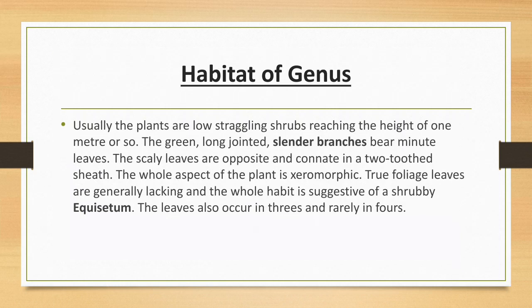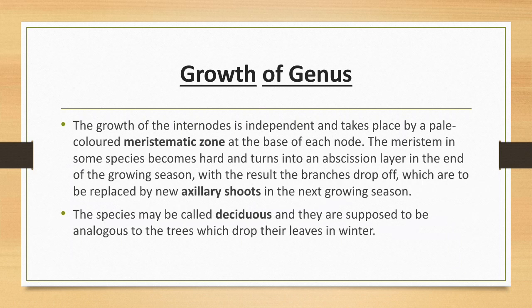Habitat of the genus: The plants are usually low straggling shrubs reaching a height of one meter or so. The green, long-jointed, cylindrical branches bear minute scaly leaves. The scaly leaves are opposite and connate in two-toothed sheaths. The whole aspect of the plant is xeromorphic. True foliage leaves are generally lacking, and the whole habit is suggestive of a shrubby Equisetum. The leaves also occur in threes and rarely in fours.